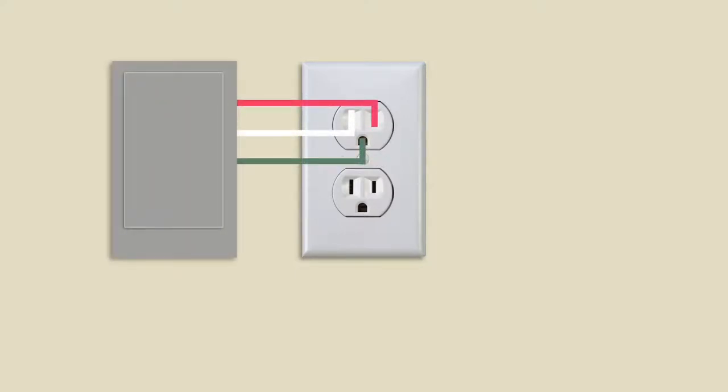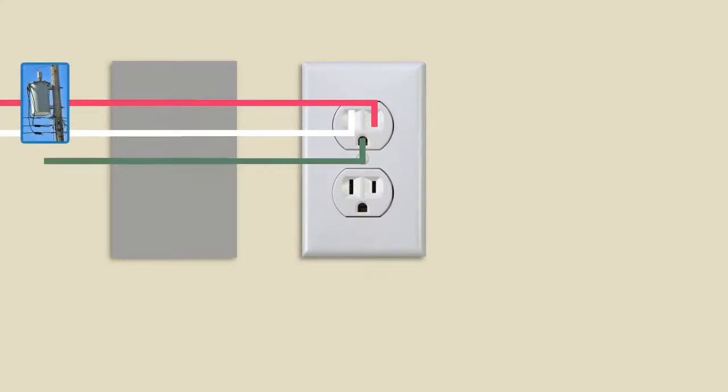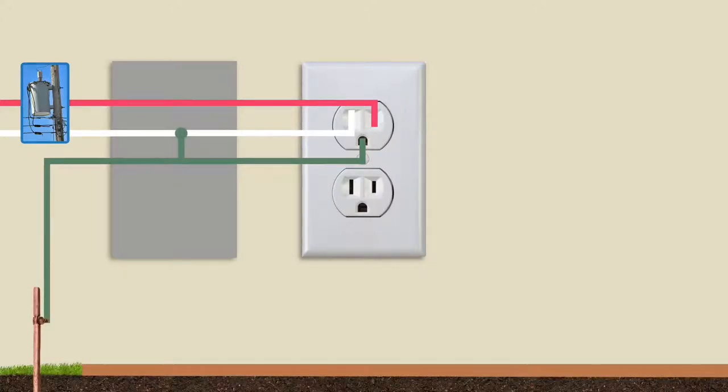Your home's wiring connects these terminals to an electrical panel. In the panel, the hot and neutral wires connect to the outside power lines, and the neutral and ground wires connect to a metal rod buried in the ground outside your home.